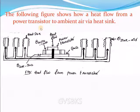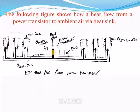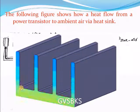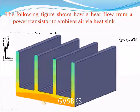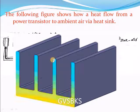We can easily understand from the figure how heat flows from the power transistor to ambient air via the heat sink. This is the power transistor and this is the case of the transistor. This total component is the heat sink. The heat developed in the transistor spreads over the heat sink and is dissipated. Here the red color represents heat, and the blue color shows how it is getting cold while flowing through the heat sink panels.